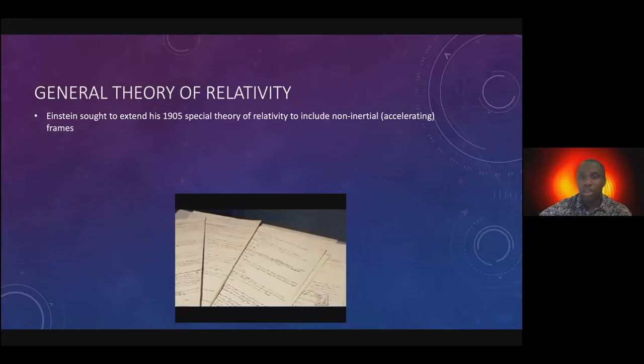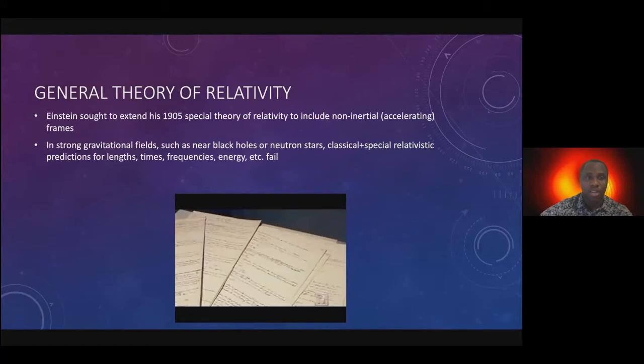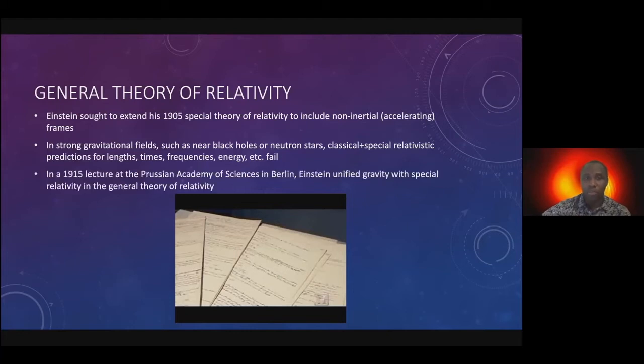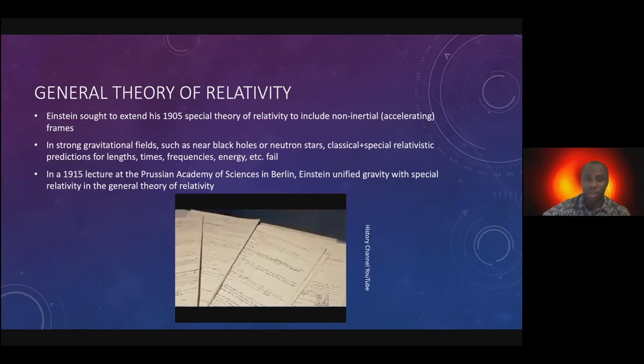We can also conceive of a new branch of unification that goes beyond just inertial frames. When Einstein extended this theory of relativity, he had to consider things like gravitational fields. These things are strong near black holes and neutron stars, and now have potential consequences for the way we measure lengths, times, frequencies, energies. In a 1915 lecture at the Prussian Academy of Sciences in Berlin, Einstein introduced his theory of general relativity, which we will hear about now.